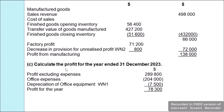In part (c), we calculate the profit for the year ended 31 December 2023. Profit before office expenses and depreciation was given as $289,800. Subtracting office expenses of $204,000 and depreciation of office equipment of $7,500 gives profit for the year of $78,300.